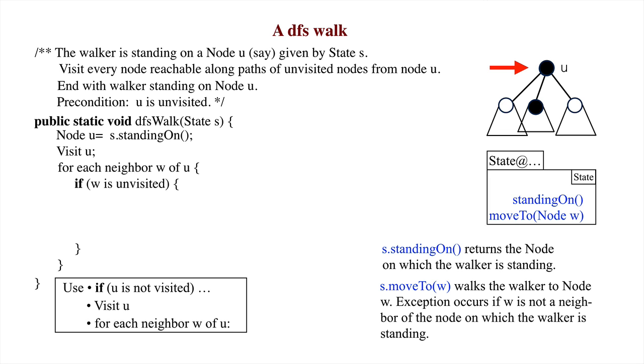Next, each unvisited neighbor w of u has to be processed. A recursive DFS has to be done on each unvisited neighbor.